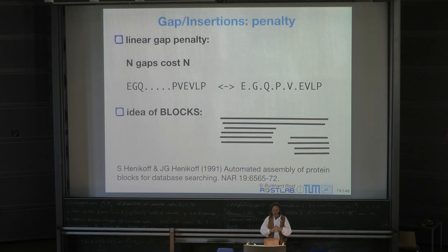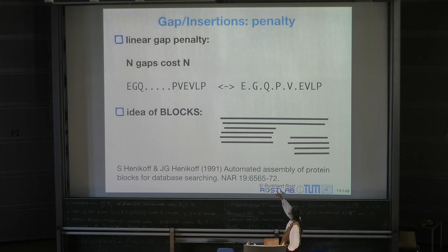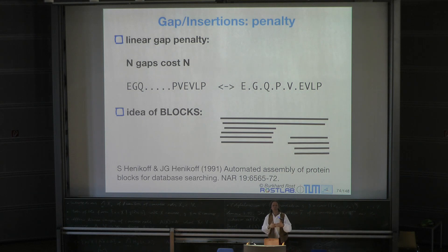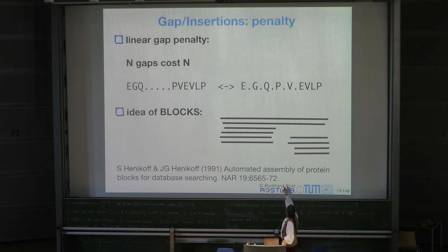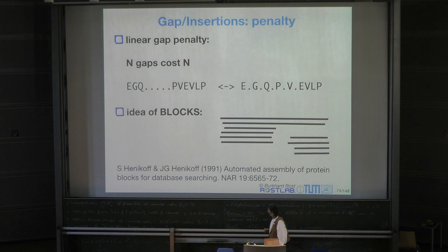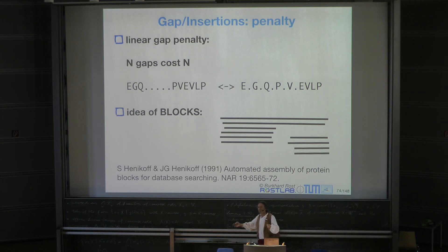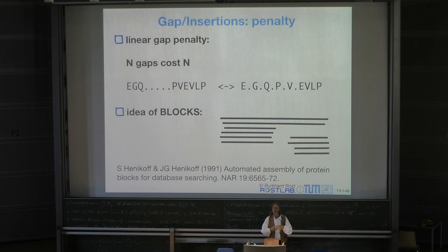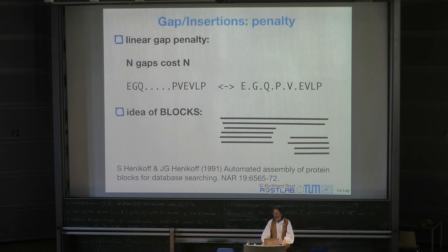This type of sequence alignment is where one line means one protein, and where lines overlap it implies the two proteins are similar. Eight proteins shown here—you'd see domains. When you see these gaps, they come together: it's much more likely to have one longer gap than many shorter ones. This is the idea Steve Henikoff called blocks. In real alignments you see blocks of regions that are well aligned, then some regions where it's unclear, then new blocks that are well aligned—which gets back to the idea of domains.